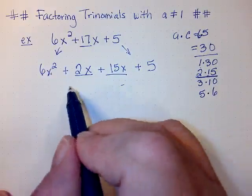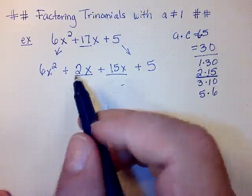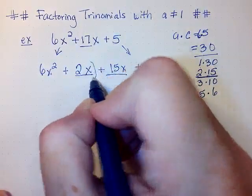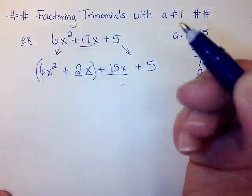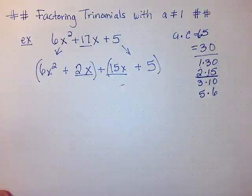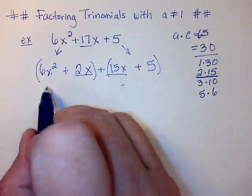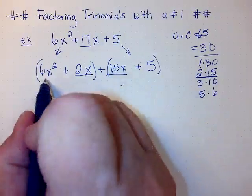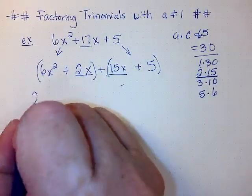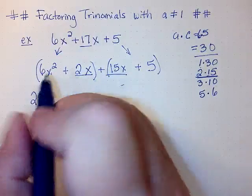We have grouped. Our next step is to factor out the GCF in each group. So I'm grouping the first two terms and the last two terms. Now I want to factor out the GCF in each of these. What is in common here? 6 and 2 is going to have a 2 in common, and x squared and x is going to have an x in common.